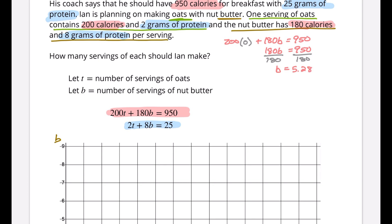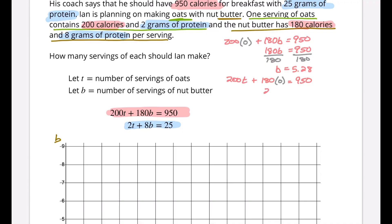And if I do the same thing for the other intercept, now I have 200t plus 180 times zero, which equals 950. The 180 times zero becomes zero, so we have 200t equals 950. When we divide by 200, t equals 4.75. So this was from our oats and this was from our nut butter.